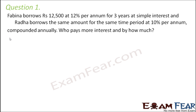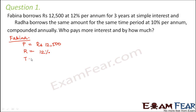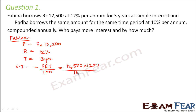There are two people here. The first one is Fabina who has borrowed money using simple interest. So let's calculate the simple interest. For Fabina, the principal is rupees 12,500, the rate of interest is 12% per annum, and the time period is three years. Simple interest = P × R × T / 100 = 12,500 × 12 × 3 / 100 = rupees 4,500. So this is the interest that Fabina has to pay.